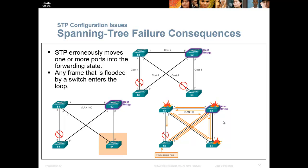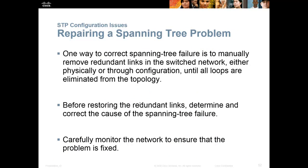If a user misconfigures spanning tree or spanning tree fails, a loop forms and frames enter and go forever — there is no mechanism to kill a layer 2 frame. Repairing a spanning tree problem: one way is to manually remove redundant links by pulling cables. Before restoring redundant links, determine what caused the problem — was it a configuration issue or something that came up or down unexpectedly? Once you plug those links back in, carefully monitor your network.